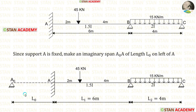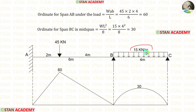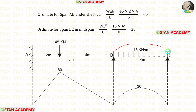We have made the first equation in spans A0A and AB. Now let us make the second equation in spans AB and BC. We have already calculated the ordinate for span AB. Now let us calculate the ordinate for span BC. In span BC, we have UDL of 15 kN per meter acting for the full span. The formula for maximum bending moment at center is WL²/8. With W = 15 and L = 4 m, we get 30. Since UDL is acting, the bending moment diagram shape will be a parabola.